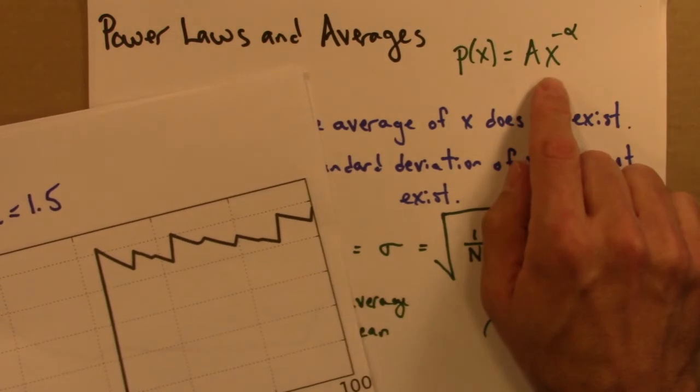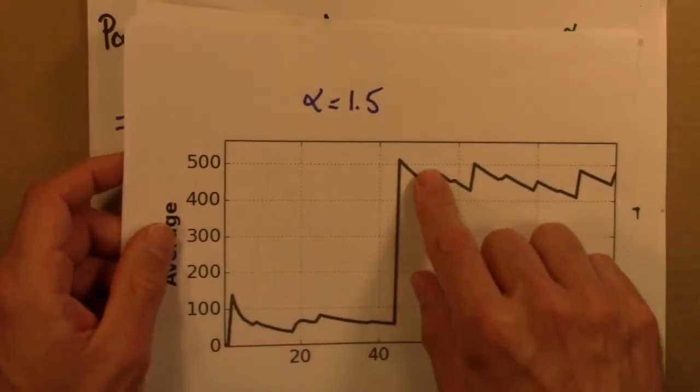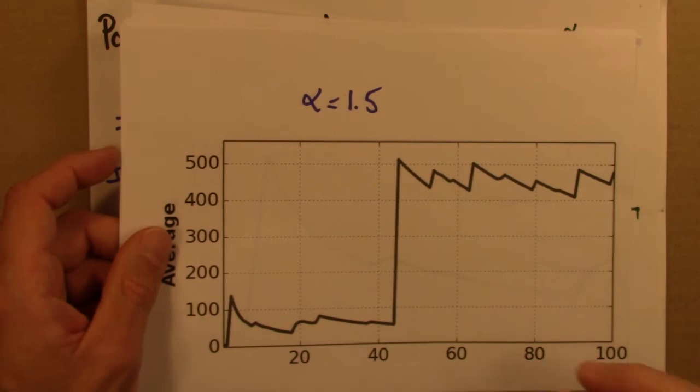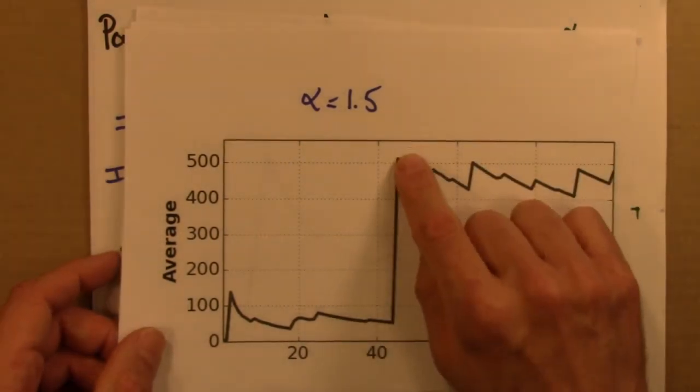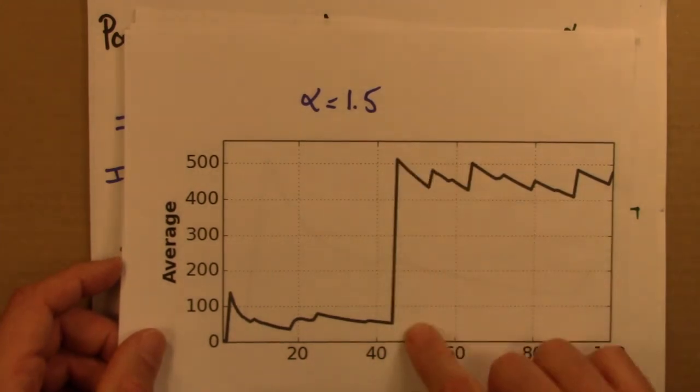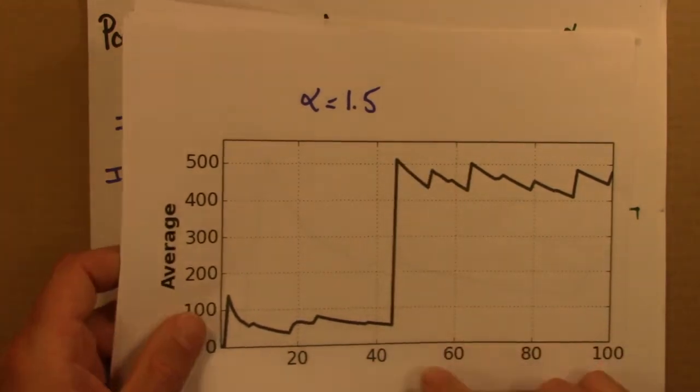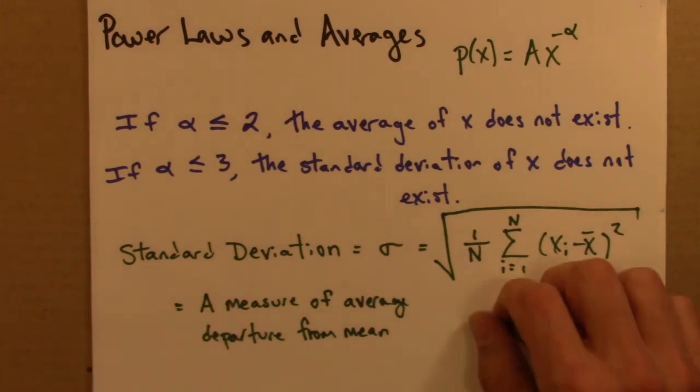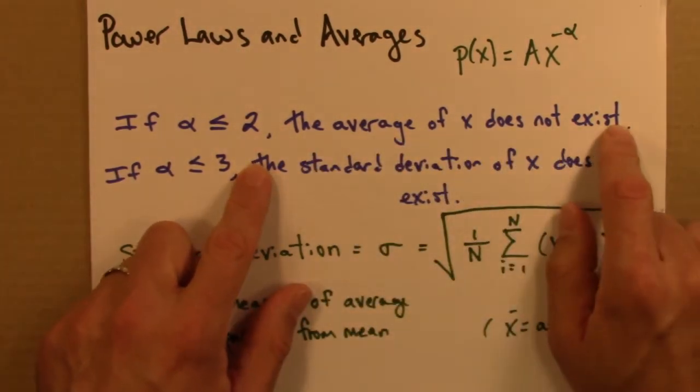Well, power laws can do that. Every now and again, we get these very rare events that can skew averages and make averages that don't exist. So if we see something like this in some data, it doesn't necessarily mean it was from outside the system. It could be a property of the system itself. Okay, so that's alpha is 1.5. There, the average does not exist.